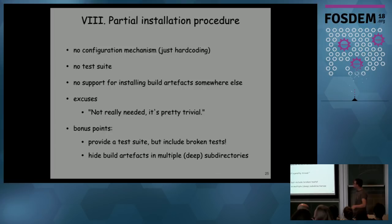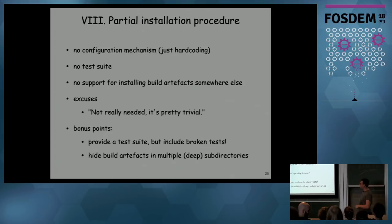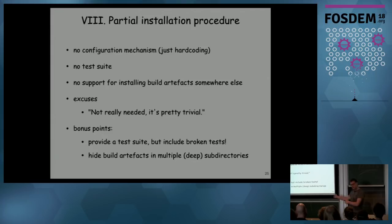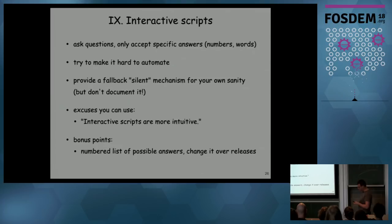Partial installation procedure: no configuration, just hard coding in the Makefile. Don't have a test suite. Don't support installing whatever is built to somewhere else — just run make, binaries appear somewhere, you don't need to copy them elsewhere. If you do provide a test suite, include tests that are broken and that you know are broken, but just tell people to ignore them. And if you have build artifacts like binaries and libraries, hide them somewhere deep and don't have an installation mechanism to copy them out — make people hunt for stuff in different locations.